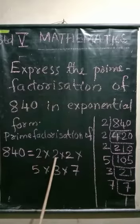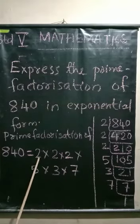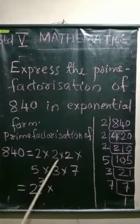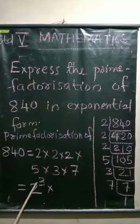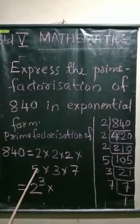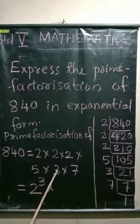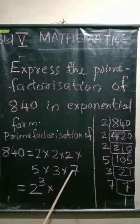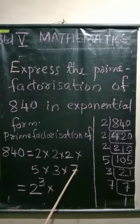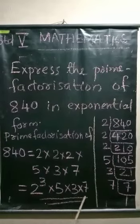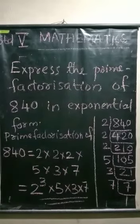How many times is each prime repeated? 2 is repeated three times, so in exponential form that is 2 raised to 3. Then write 5, then 3, then 7. This is the exponential form of 840: 2³ × 5 × 3 × 7.